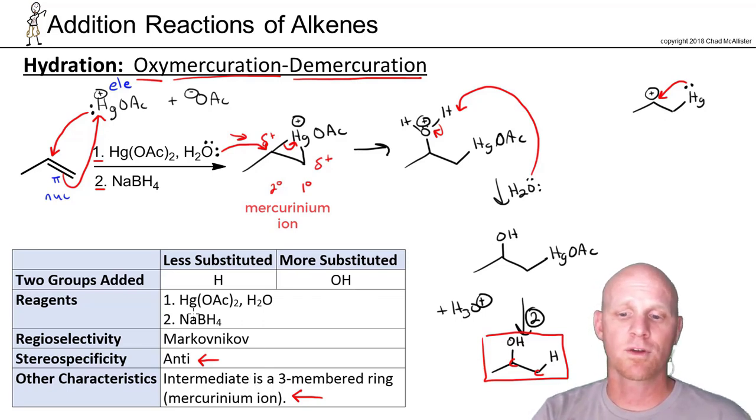One thing to note about this—we said we've got this mercurinium ion instead of a carbocation. So this also goes Markovnikov, just like acid-catalyzed hydration did. The big difference is without a carbocation intermediate, this will never undergo rearrangements, something we have to consider with acid-catalyzed hydration. So because they're both Markovnikov, for some alkenes, if there's no favorable rearrangement, they'll give the same product generally. But if there's a favorable rearrangement, acid-catalyzed hydration will proceed through that rearrangement. This reaction, oxymercuration-demercuration, will not.